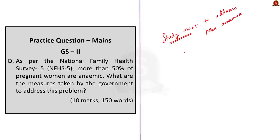In this discussion we covered anemia, its causes, and its impacts. We saw the schemes India provides to reduce anemia in women and children. The key question raised is: what about anemia in men — is it being addressed? This is going to be a very important topic for both prelims and mains. Anemia basics can be asked as a prelims question, while schemes and steps taken to reduce anemia can form a mains question.